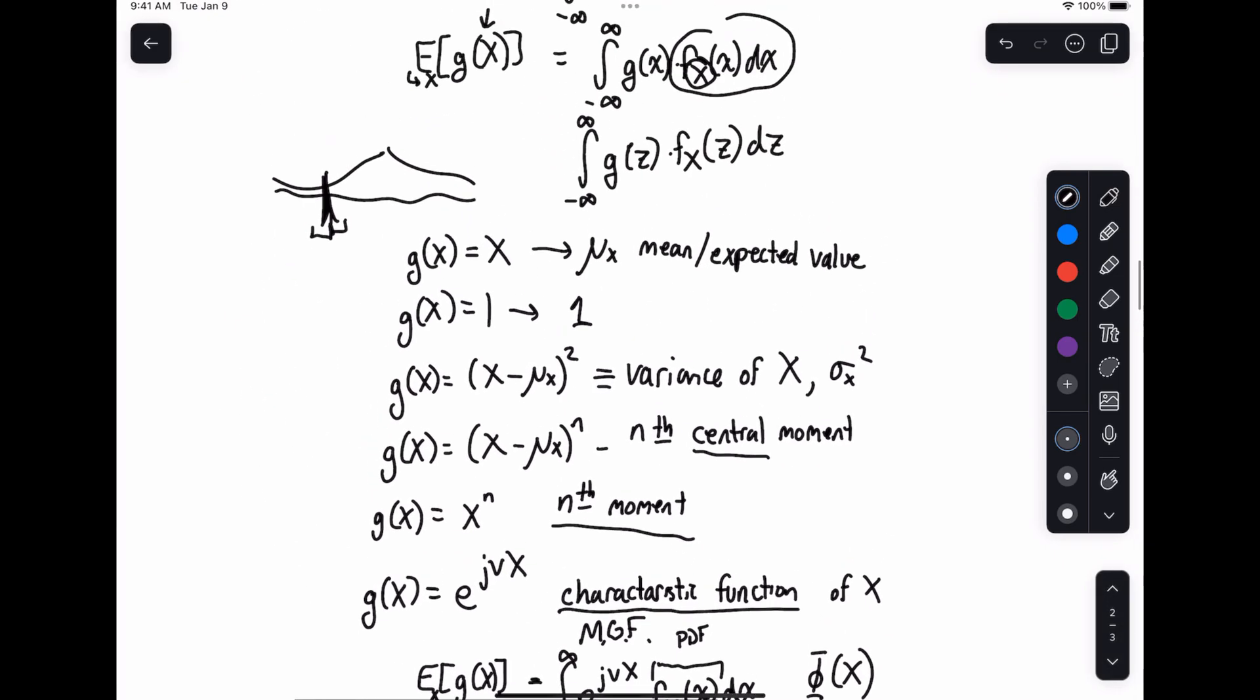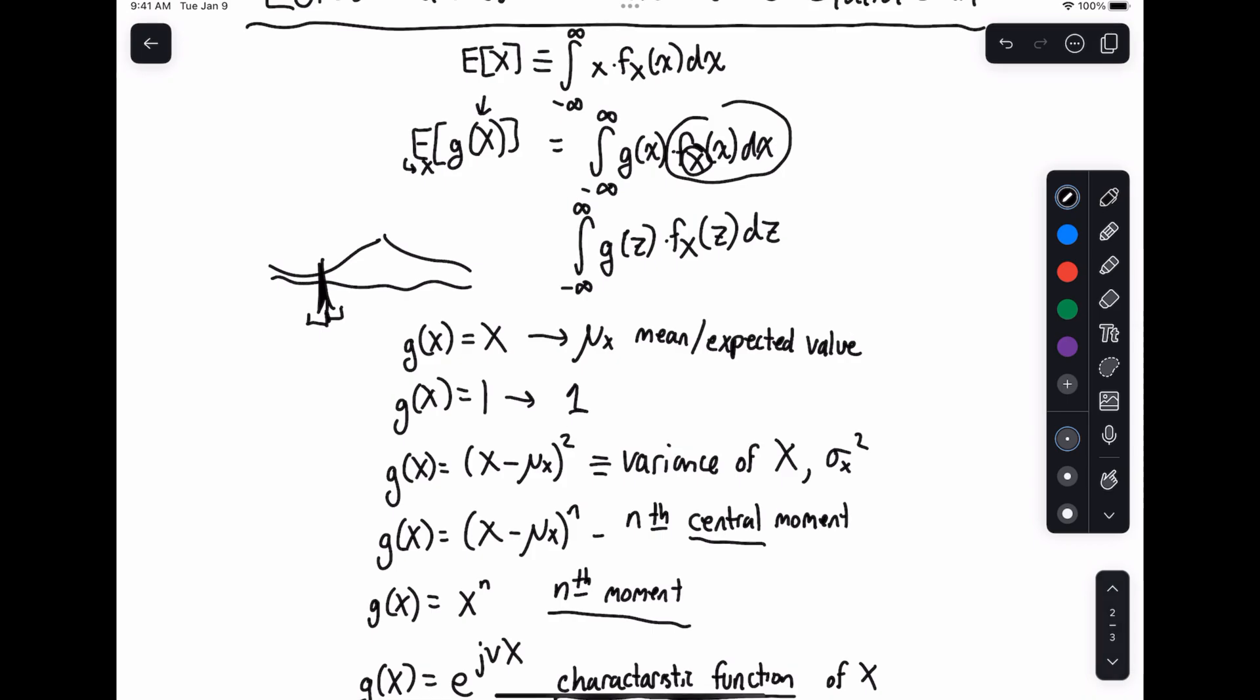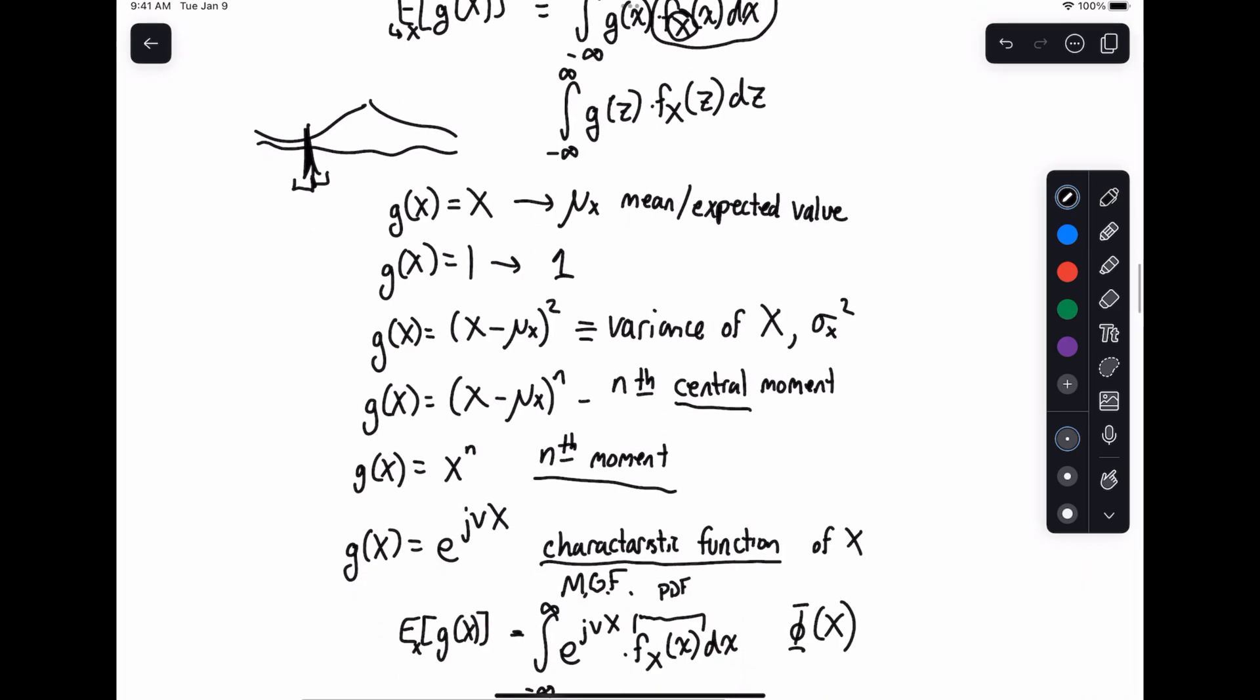So hopefully this gives you an idea of Lotus. It's very powerful. We're going to be using it all the time to do transformations. And of course, this is one of those instances where things just work the way you may expect them to right off the bat, which is fantastic. So in the next video, we'll probably talk about jointly distributed random variables. Thanks for watching, and I will see you then.